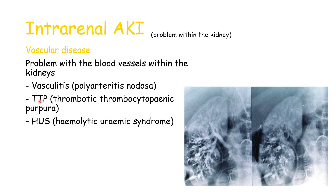Another condition is TTP — thrombotic thrombocytopenic purpura — a blood disorder resulting in blood clots forming in small blood vessels throughout the body. This can lead to kidney damage, because having many small blood clots within the kidney is very damaging. Then there is hemolytic uremic syndrome — a condition where the small vessels in your kidneys become damaged or inflamed, which can also be a consequence of infection.